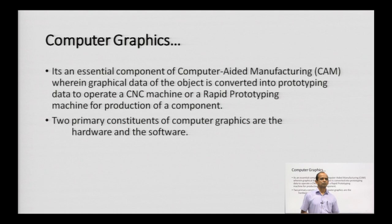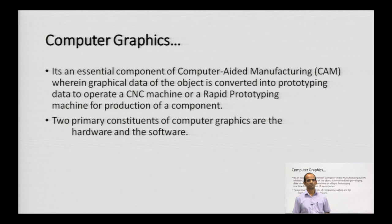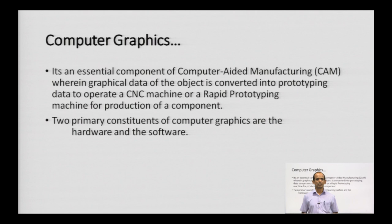Computer graphics is an essential component of computer-aided manufacturing, wherein graphical data of the object is converted into prototyping data to operate a CNC machine or a rapid prototyping machine for production of the component. There are two primary constituents of computer graphics: hardware and software. We will have a brief look at the various kinds of hardware and software employed.